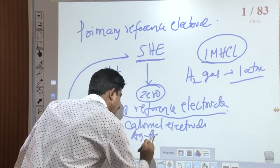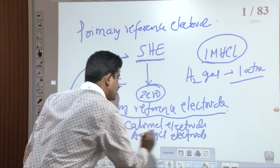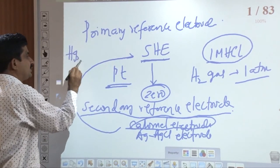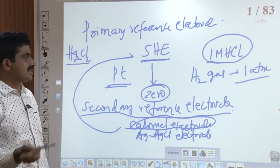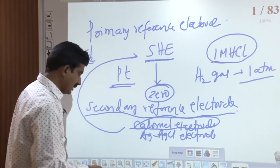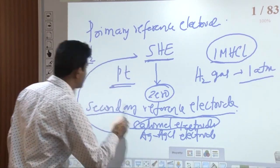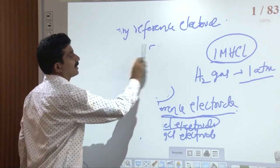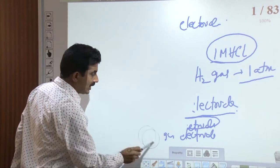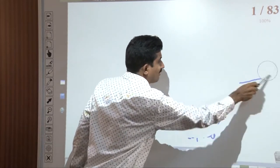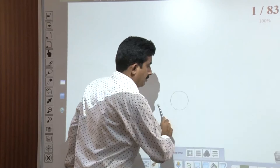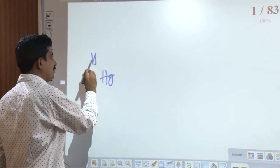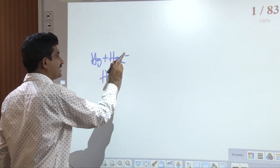The calomel electrode — calomel is the commercial name of Hg₂Cl₂, mercurous chloride. The calomel electrode consists of a glass tube. At the bottom, mercury is kept, and a paste of mercury, mercurous chloride, and KCl covers the mercury. The tube has two side openings. From one opening, a solution of KCl is employed as the electrolyte.